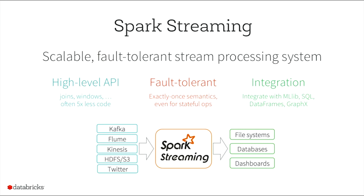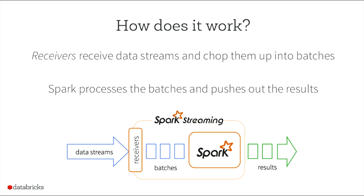It can take data from Kafka, Flume, Kinesis, HDFS, Twitter. You can build your own receiver and push out data to any databases, dashboards, or file systems. At a very high level, Spark Streaming runs receivers whose job is to receive data streams. The receivers divide the data stream into chunks or batches of, say, one or two seconds — that is configurable — and push them into Spark. Spark then takes these batches, treats them as RDDs, runs your standard RDD operations on top, and spits out results in batches.